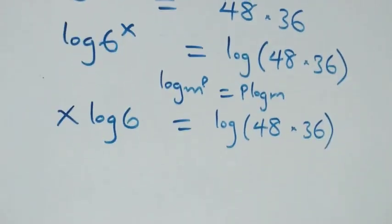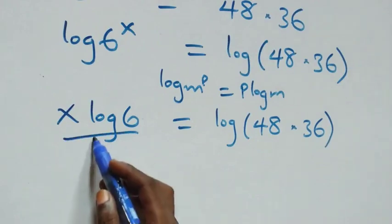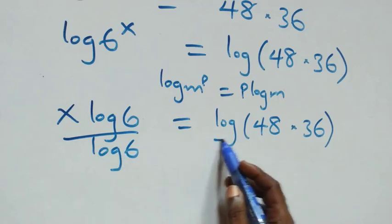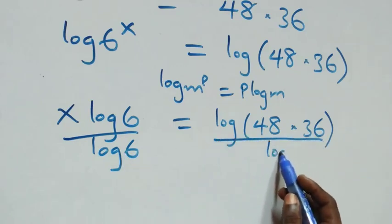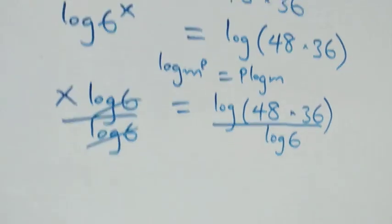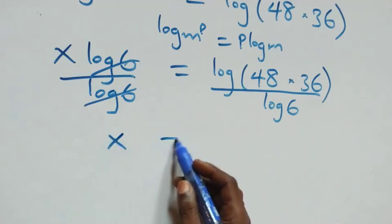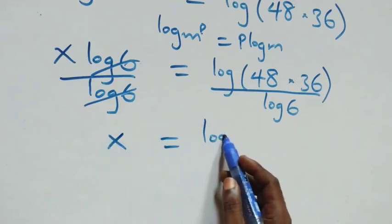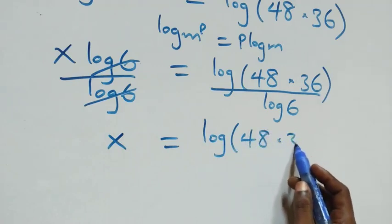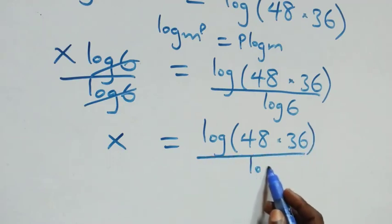The next step: we divide both sides by log six — divide this side by log six and also divide that side by log six. The log sixes cancel each other, and we have x left, which equals log of forty-eight times thirty-six over log six.